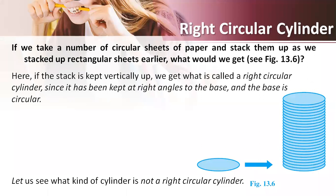Now let us see what is meant by right circular cylinder. A right circular cylinder is a cylinder that has a closed circular surface having two parallel bases on both ends and whose elements are perpendicular to its base. It is also called as right cylinder.